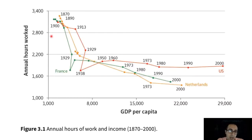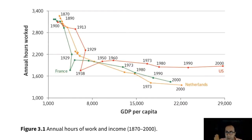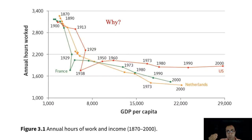Interestingly, at the same time, total annual hours worked declined from around 3,000 hours per year to 1,500 hours — total annual hours almost halved in Netherlands. So we gather from this chart that on average, people in Netherlands, France, and the US are now much richer and work much less compared to their great-grandparents who lived around 1900. The interesting question is why — which factor can explain these two trends happening at the same time?